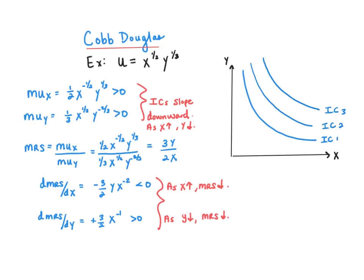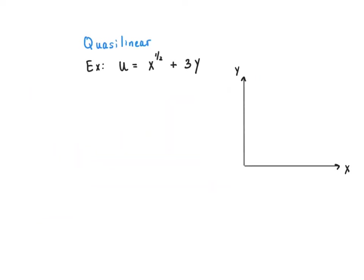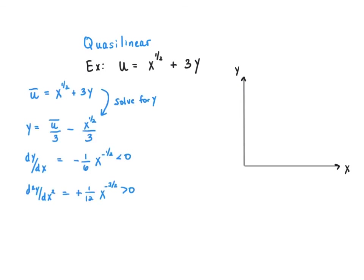Adding two more indifference curves gives me an indifference map, where the further the consumer moves in this direction, the higher the level of utility. As a final example, let's look at graphing an indifference curve for a quasi-linear utility function that looks like u equals x to the one-half plus 3y. Here you see that when fixing u equal to some constant and then solving for y, taking the first and second derivatives of y with respect to x give us a negative first derivative and a positive second derivative. For this reason, we know that an indifference curve is downward sloping and convex to the origin.